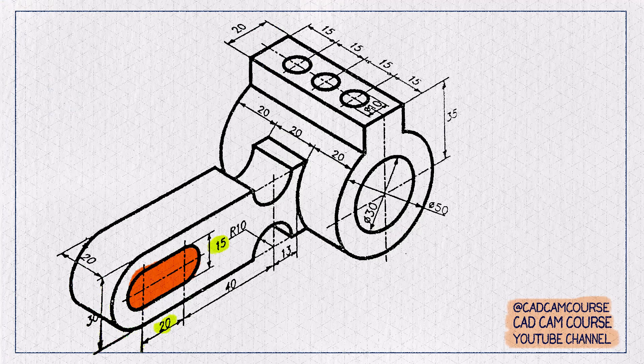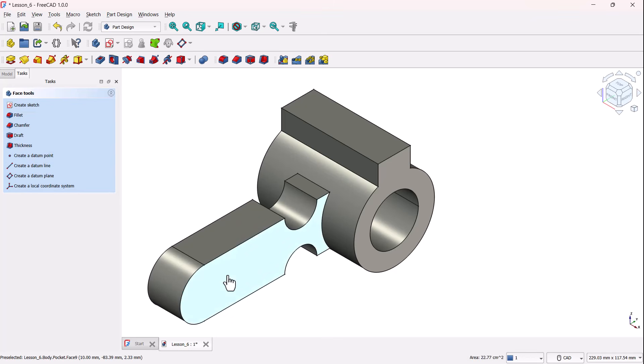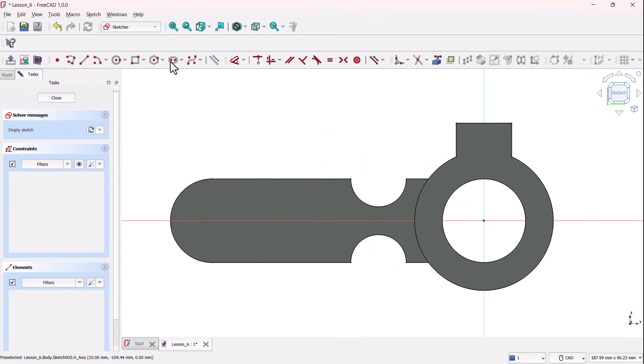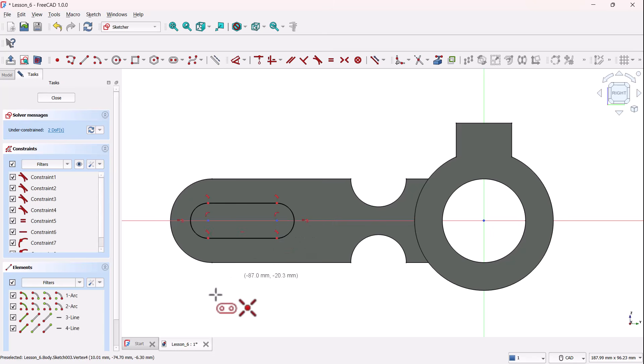In this next step, we'll add this slot to this handle. Start by selecting this face here. Then go ahead and click the create sketch tool. Now, grab the slot tool from the toolbar. We want this slot centered on this axis. So, click the first point on this axis to set the first center. Then drag the slot along the axis and click again to set the second center.